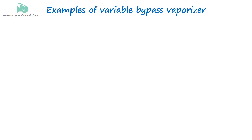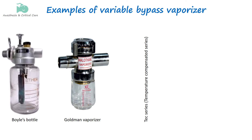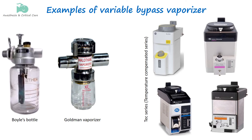Variable bypass vaporizers are the most common type used in modern anesthesia machines due to their reliability and precision in delivering volatile anesthetics. Vaporizers using this method of delivering output are listed here. We will talk about individual vaporizers in the coming videos.